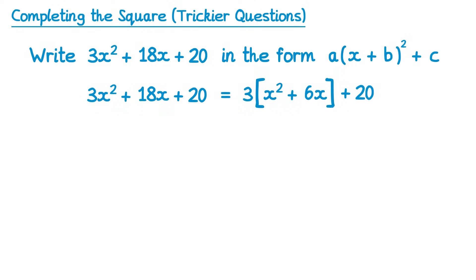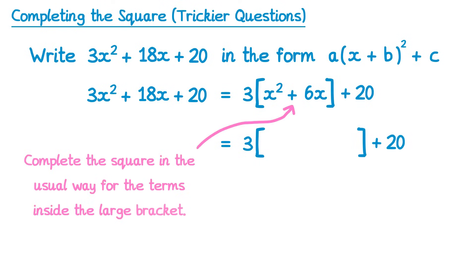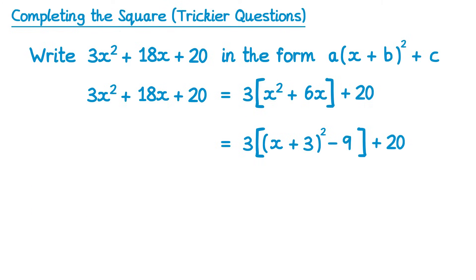The next step is we're going to write this out again, but instead we're going to change what's inside the large bracket. In fact, we're going to complete the square in the usual way for the terms that are inside the large bracket. So, we're going to complete the square for x squared plus 6x. We know that'll be a bracket squared, and to work out what goes inside the bracket, remember we half the coefficient of x, so half of 6 is 3. Then to work out the last term, we square what was inside the bracket and subtract it. So subtract 3 squared is subtract 9. So we've now completed the square on the part that was inside the bracket.